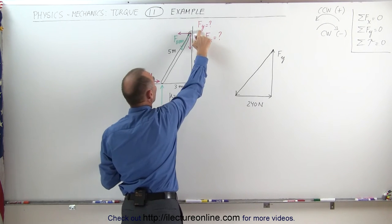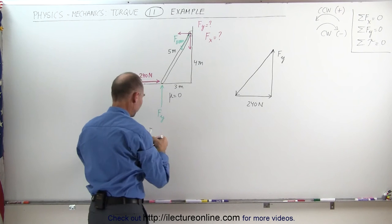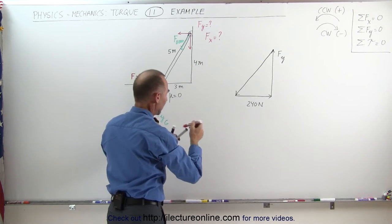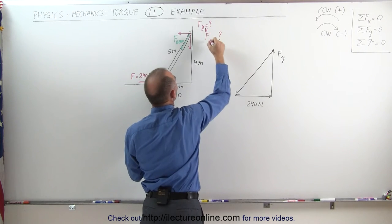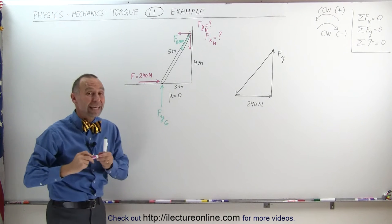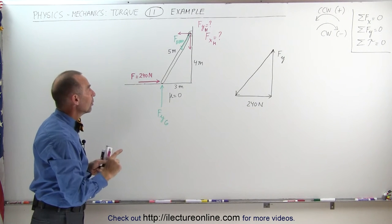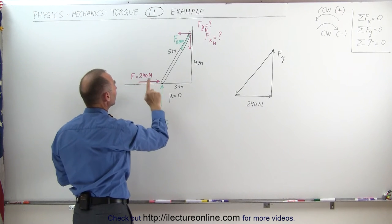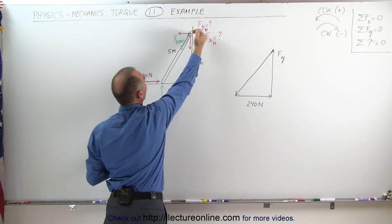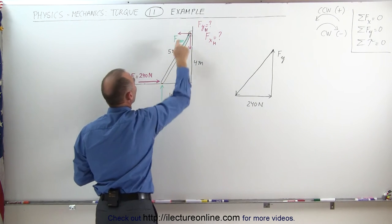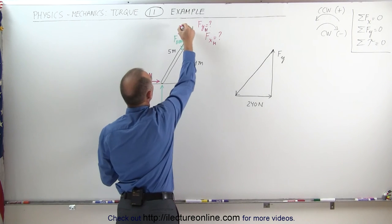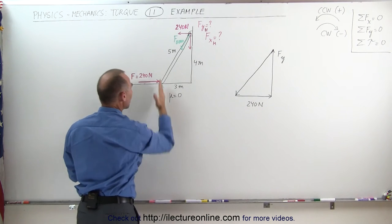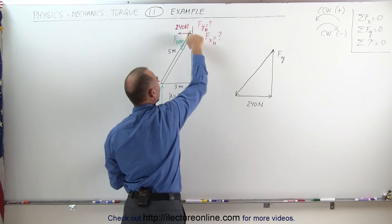We need to keep these separate — let's call one F sub y at the ground and the other F sub y at the hinge. The 240 newtons only has one counterpart pushing in the opposite direction, which is at the hinge, so the horizontal force at the hinge must also equal 240 newtons. Whatever the vertical force is at the ground must be counterbalanced by the vertical force at the hinge pushing in the opposite direction.